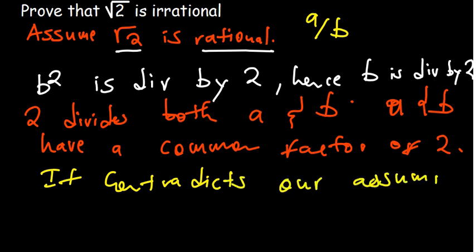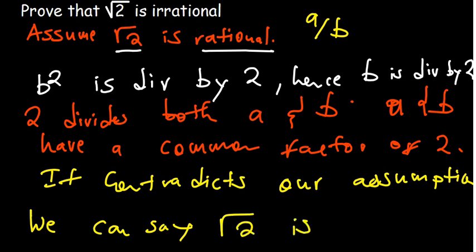Since it contradicts our assumption, then it's not true. Then we can say root of 2 is irrational. That's basically how you go about this. I took a bit of time to help you understand the few steps that we get to consider whenever we are proving that the root of 2 is irrational.